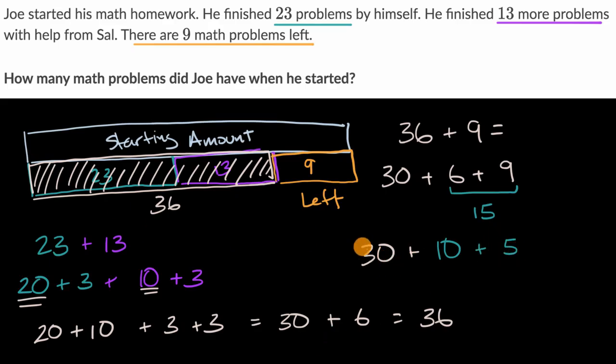Thirty plus 10, that's 40. So it's going to be 40 plus 5, which equals 45.